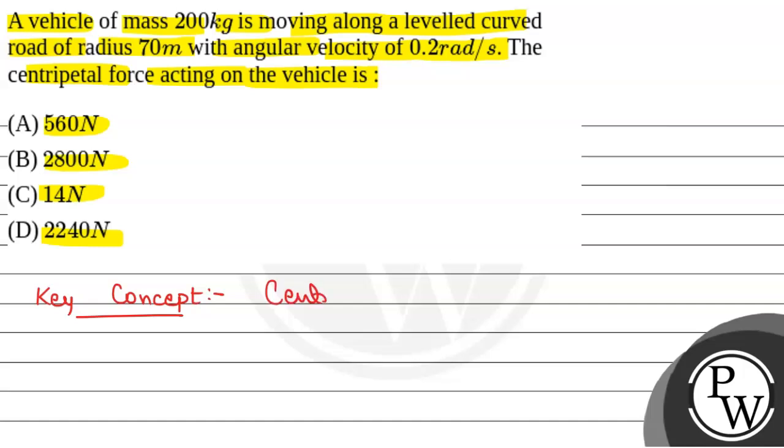Centripetal force which acts radially inwards on an object in circular motion. The value of centripetal force is equal to m omega square r, where m is the mass of the object, and in this case it will be mass of the vehicle.